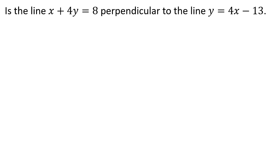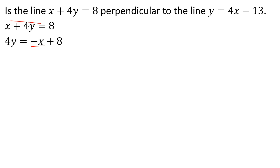Example: Is the line x plus 4y equal to 8 perpendicular to the line y equal to 4x minus 13? We take the line x plus 4y equal to 8 and rearrange by dividing by 4 to find the slope M1.